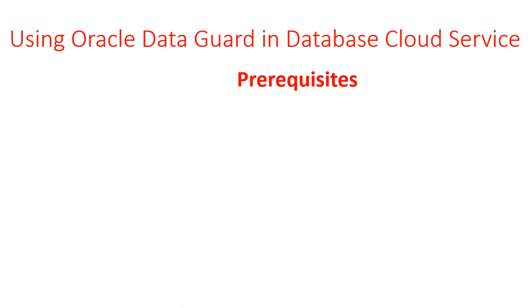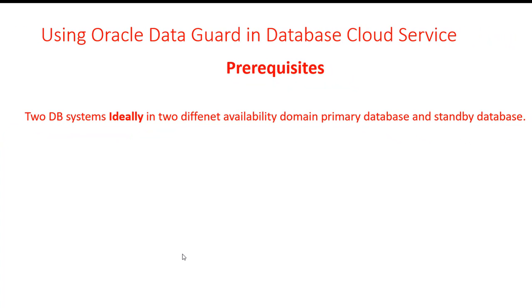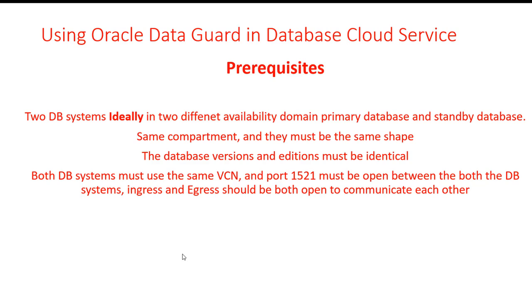There are prerequisites to create a Data Guard configuration. You need two DB systems, ideally in two different availability domains — one primary and one standby. They must be in the same compartment and must be of the same shape and same software levels and versioning. In OCI, a Data Guard configuration is limited to one standby per primary database. The database versions and editions must be identical, and active Data Guard requires Enterprise or Extreme Performance editions.